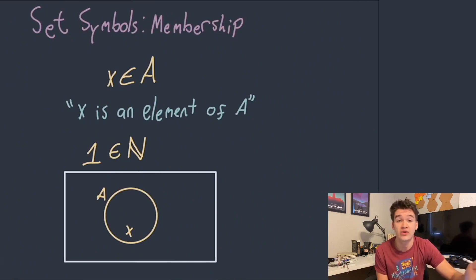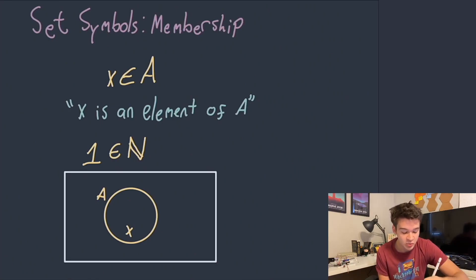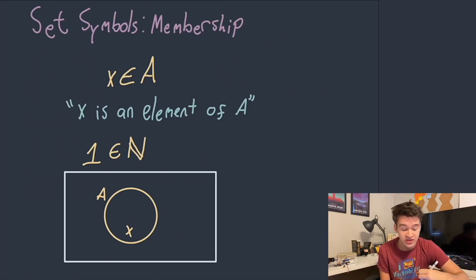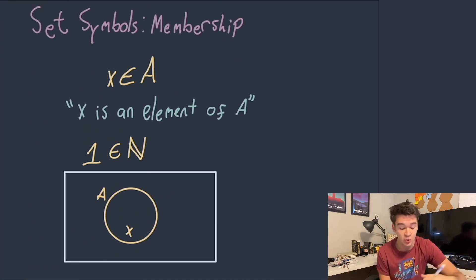The first important thing to know when talking about sets is how to describe set membership. Using this symbol, which looks a little like an E but is more of a C with a line through it, that symbol means 'is an element of' or 'is in.' So here we're saying that X is inside of A — X is an element of A. We can see that represented in our Venn diagram by seeing that X is inside the circle that represents A. For example, 1 is an element of the natural numbers.